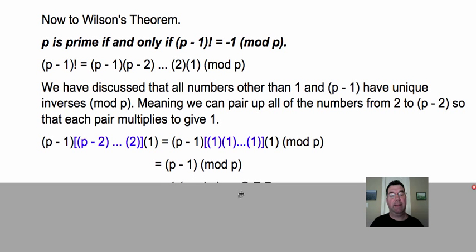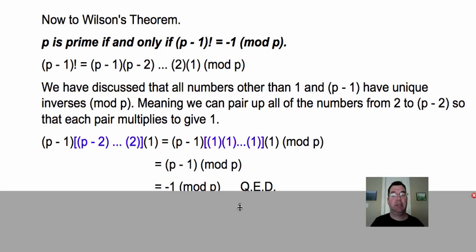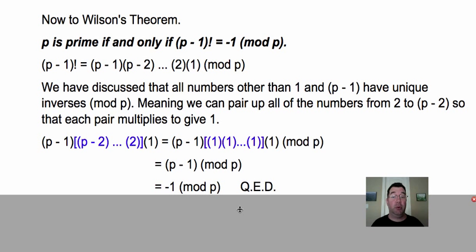So if I simplify that, that's p - 1 modulo p. And just like I added p before to get it between zero and p - 1, if I want to make it look more like Wilson's theorem, I just need to subtract p as many times as I want, still making it congruent, but making it look a little different. So if I subtract p just once, I'll get -1 (mod p), which is the right side of this theorem. So it has been proven.